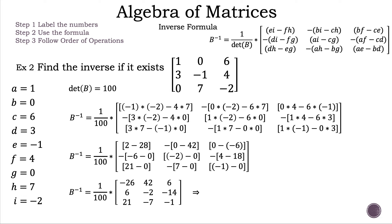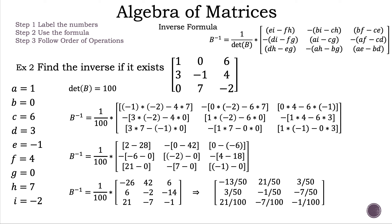Now let's multiply 1 over 100 to each element inside the matrix, and remember to simplify along the way. We have our inverse matrix. In row 1 we have negative 13 over 50, 21 over 50, and 3 over 50. In row 2 we have 3 over 50, negative 1 over 50, and negative 7 over 50. In row 3 we have 21 over 100, negative 7 over 100, and negative 1 over 100. That is our answer for example 2.